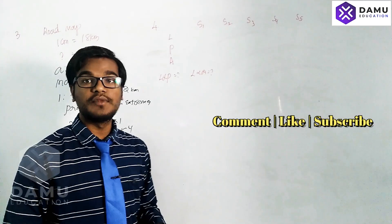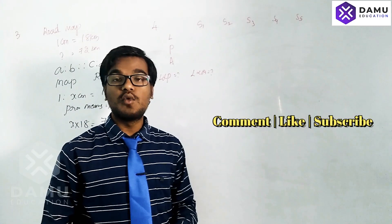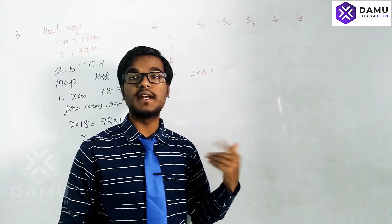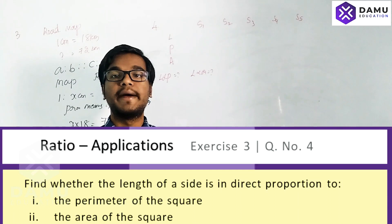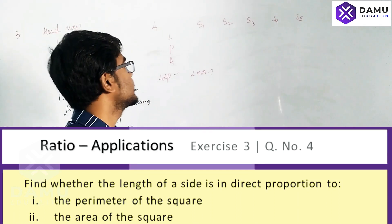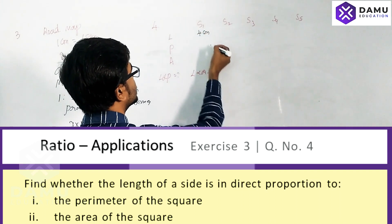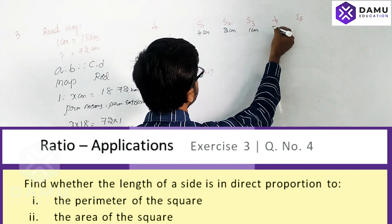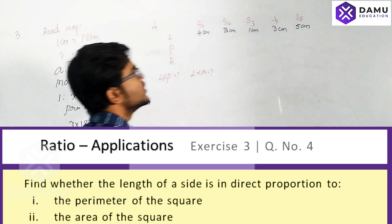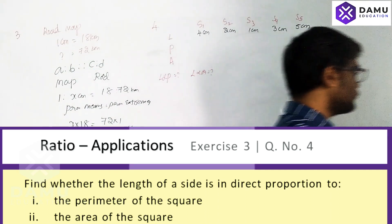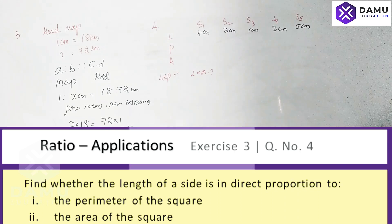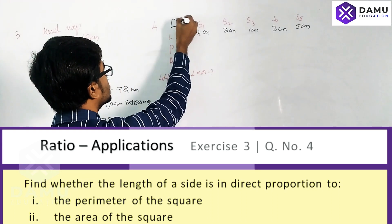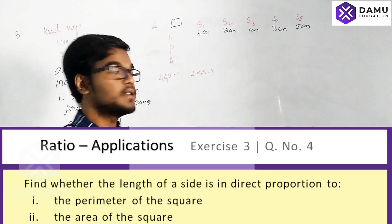Our next question is the fourth one. We have to check which relationships hold: is length proportional to area, or is length proportional to perimeter? We are given squares of different sizes with side lengths of 4, 2, 1, 3, and 5 centimeters.